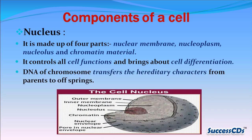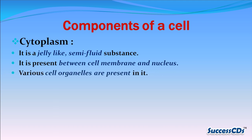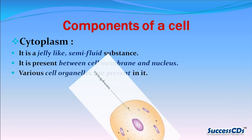Nucleus: it is made up of four parts — nuclear membrane, nucleoplasm, nucleolus, and chromatin material. It controls all cell functions and brings about cell differentiation. The DNA of chromosomes transfers hereditary characters from parents to offspring.